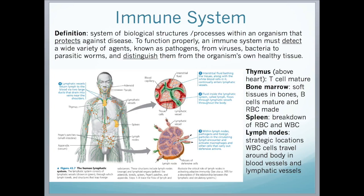In this diagram, we can see the human lymphatic system. The lymphatic system consists of lymphatic vessels, shown in green, through which lymph travels, and structures that trap foreign substances. These include the lymph nodes, shown in orange, which are strategically positioned around the body. The lymph organs, shown in yellow, include the spleen, thymus, tonsils and adenoids. The thymus, just above the heart, is where T cells mature. The bone marrow is where B cells mature and red blood cells are made. The spleen is where the body breaks down red and white blood cells.